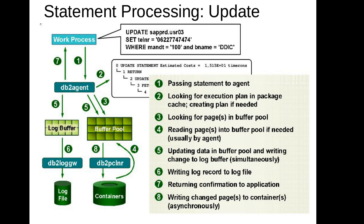Then the log data is written to the log file on disk, and a notification is sent to the work process. In the meantime, the actual data is still in the buffer pool and has not yet been written to the database disk — it's still in RAM. Now you might ask: what happens if there's a power shutdown? All this data would be lost. For example, if you made a transaction of 1 million and got confirmation, but the data was flushed — when the system comes up you might not see the transaction. Here comes the concept of recovery.